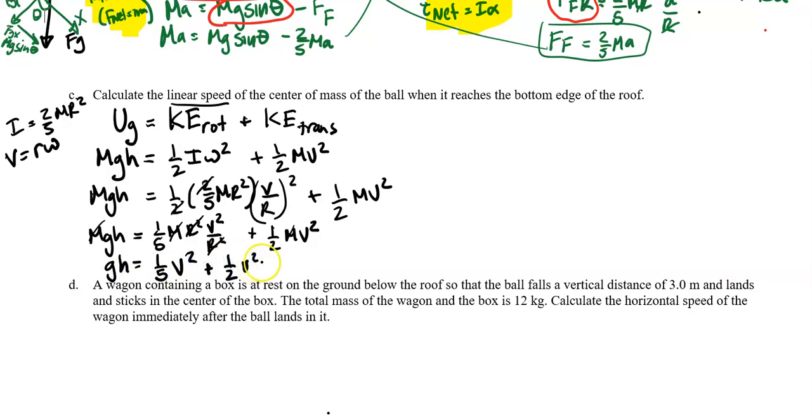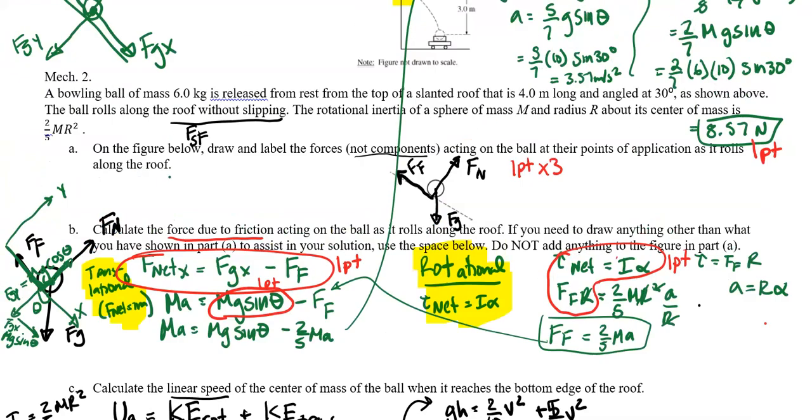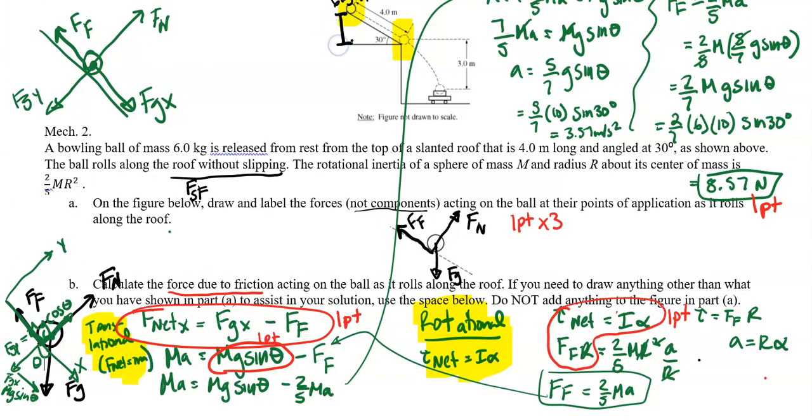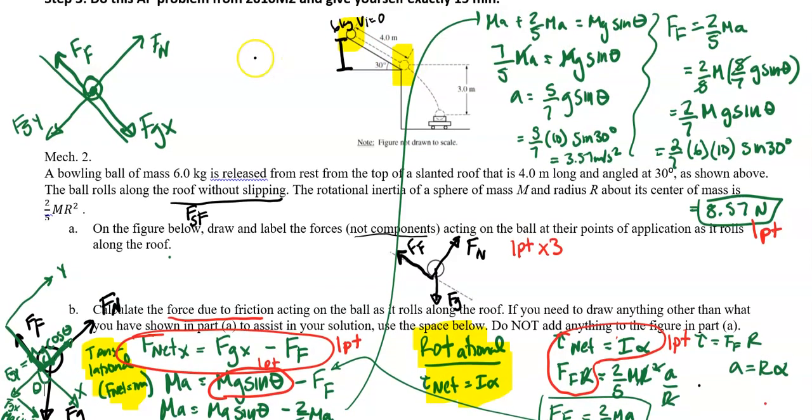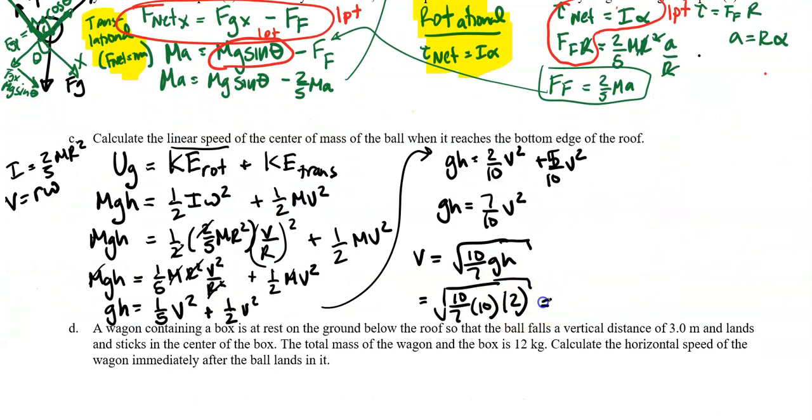We have two V squared terms. Let's choose a common denominator of 10. So we have 2/10 V squared plus 5/10 V squared, which is 7/10 V squared. So V will be square root of 10/7 GH. Let's plug in numbers. G is 10, and the height is 4 sine 30 degrees, which is 2 meters. When I put that in my calculator, I get 5.34 meters per second.